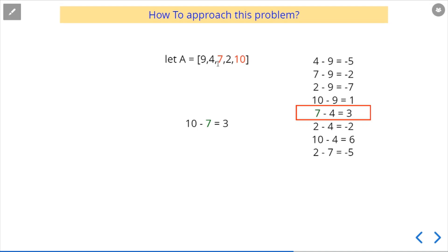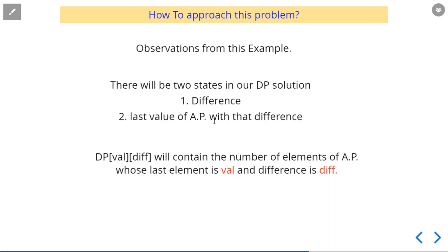We have a prior difference: 7 minus 4 equals 3, and 10 minus 7 equals 3. So we make two states in the DP: one state holds the last value of the arithmetic progression, and the other holds the common difference. If a number exists with that difference, we increment the length; otherwise we continue. This will become clearer in the coding section.